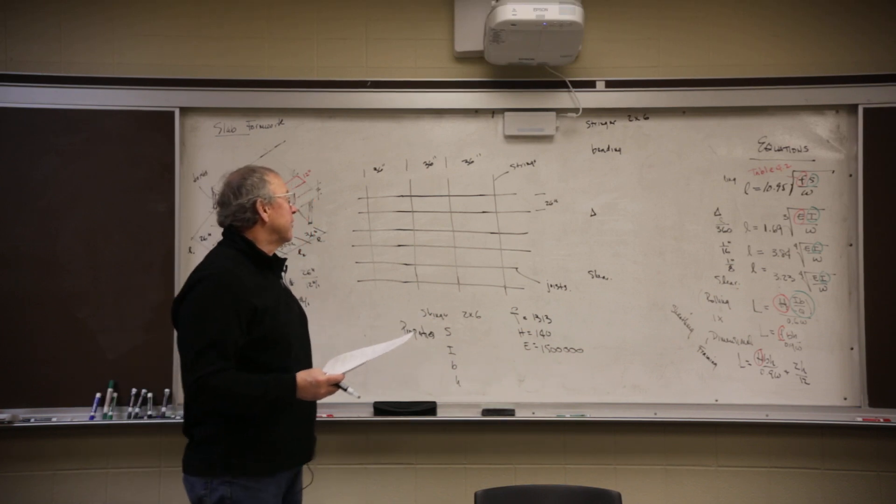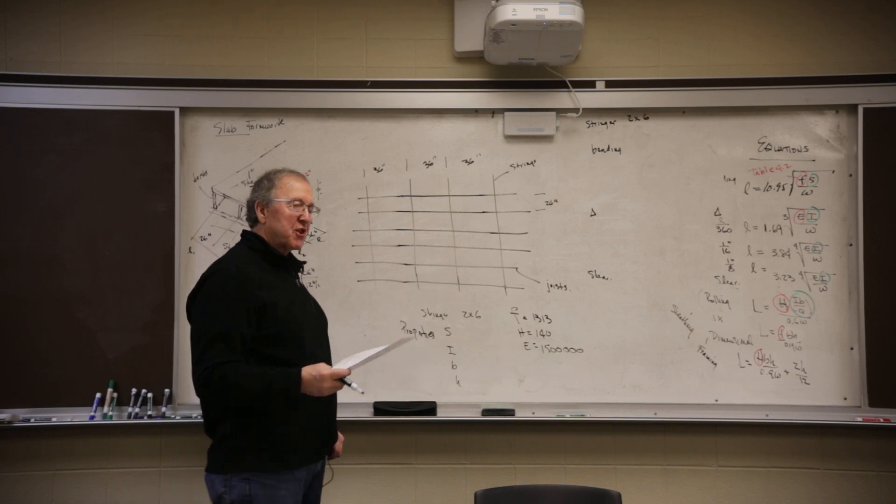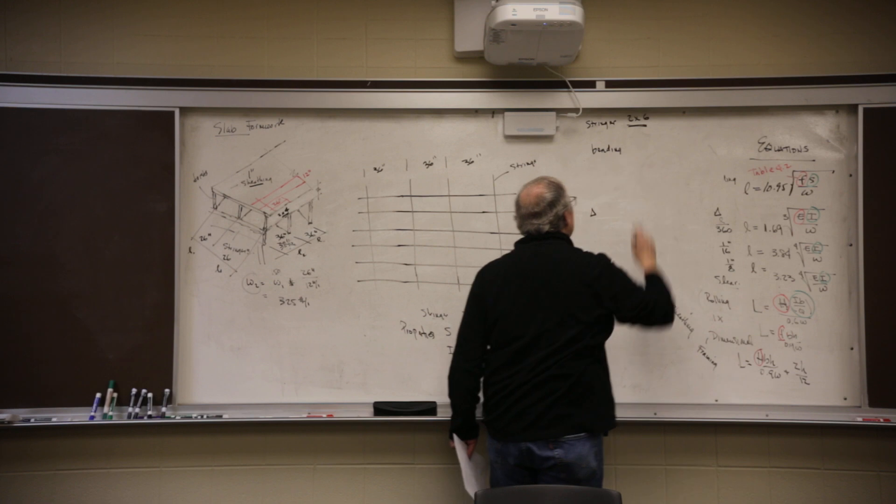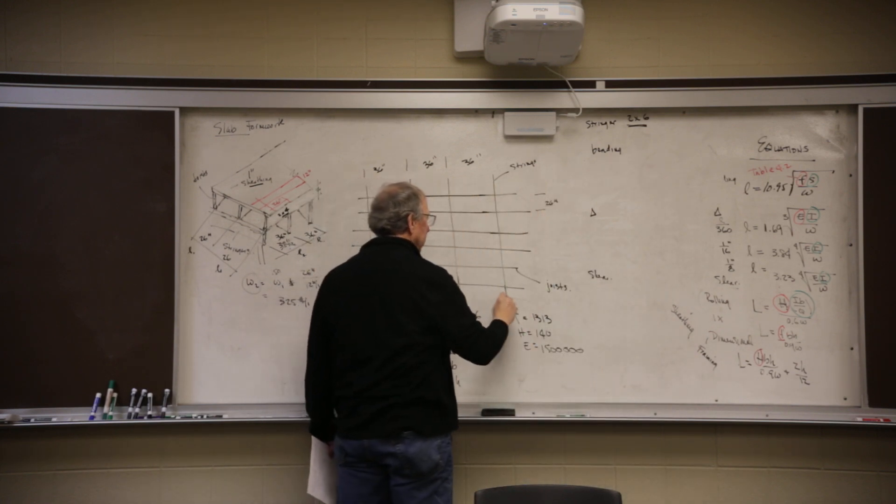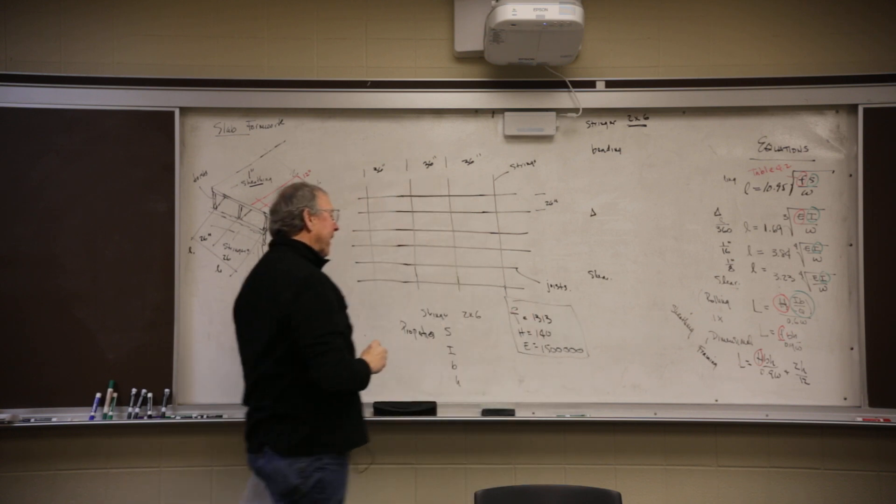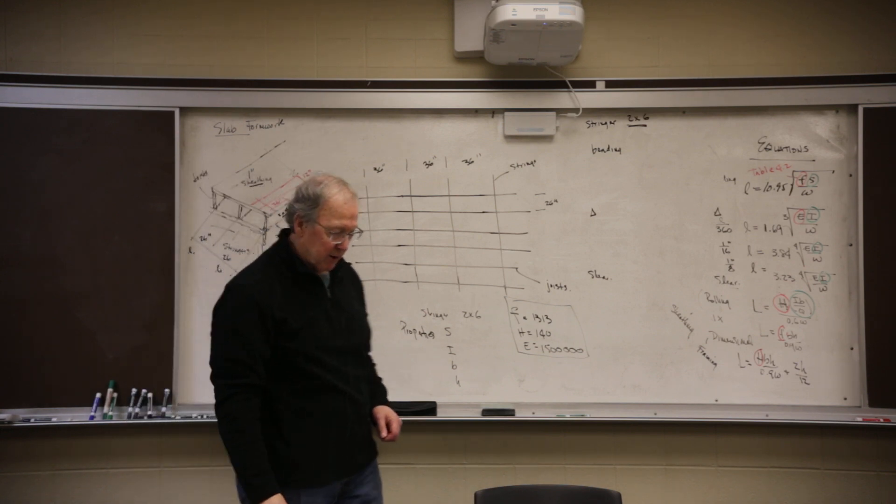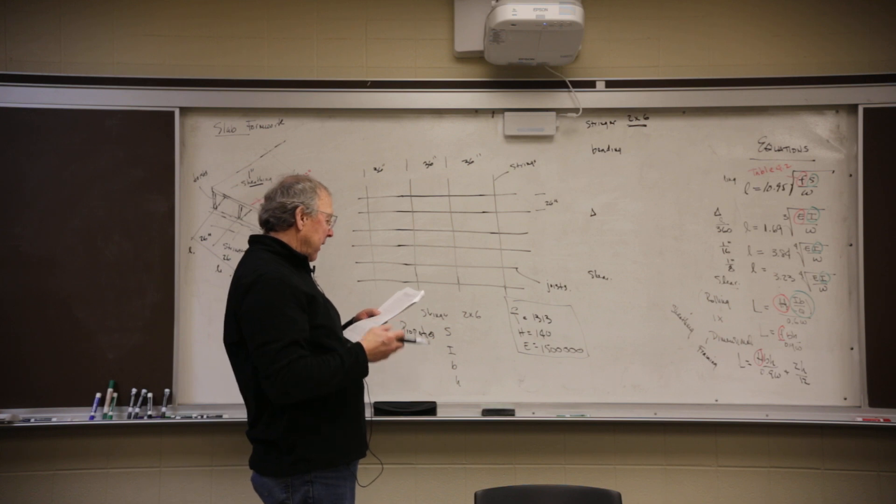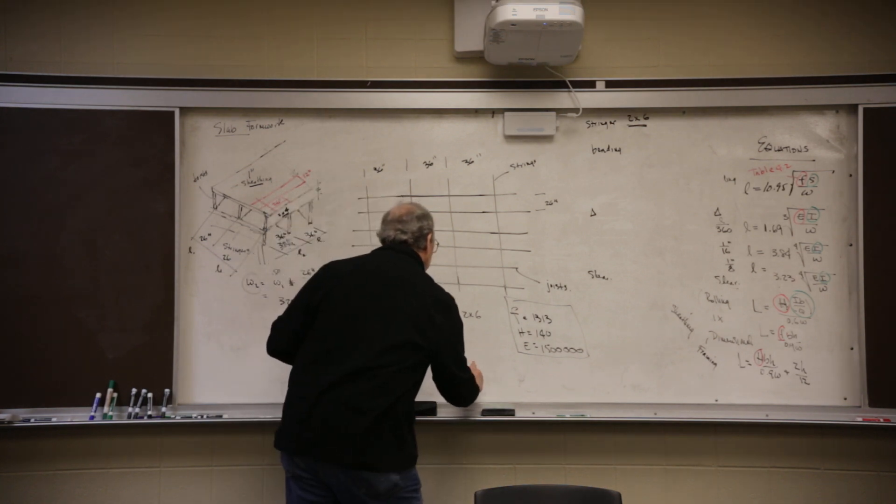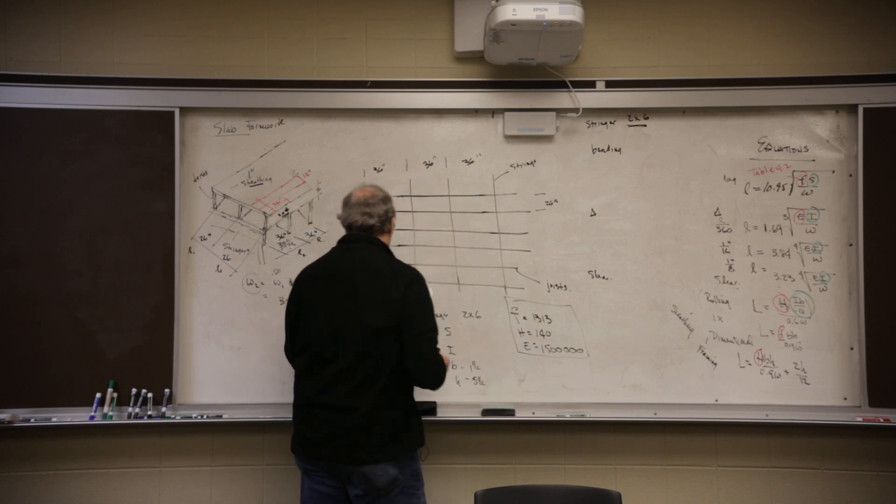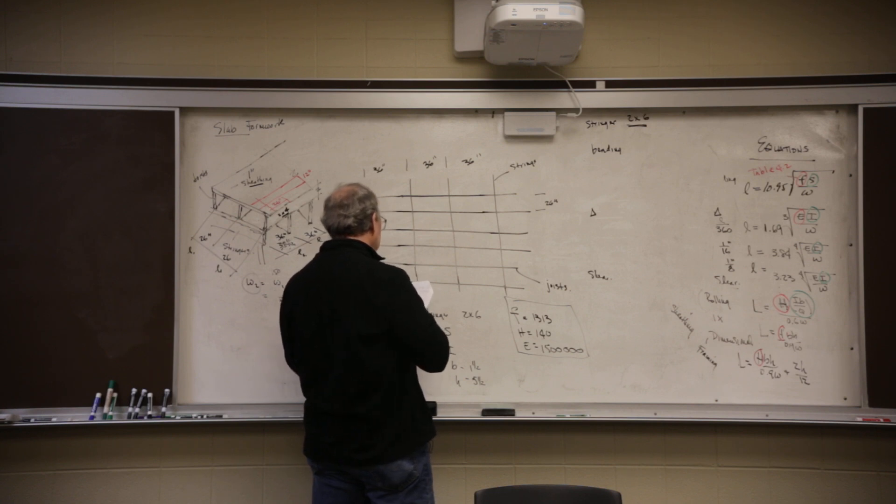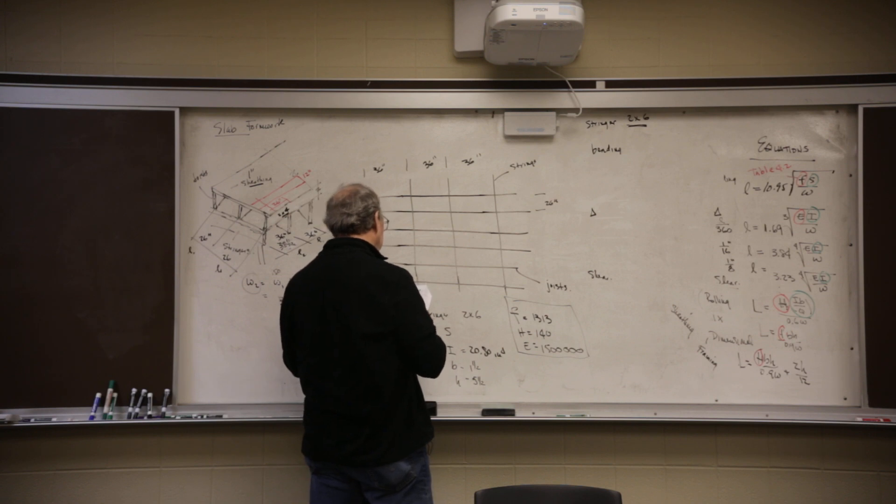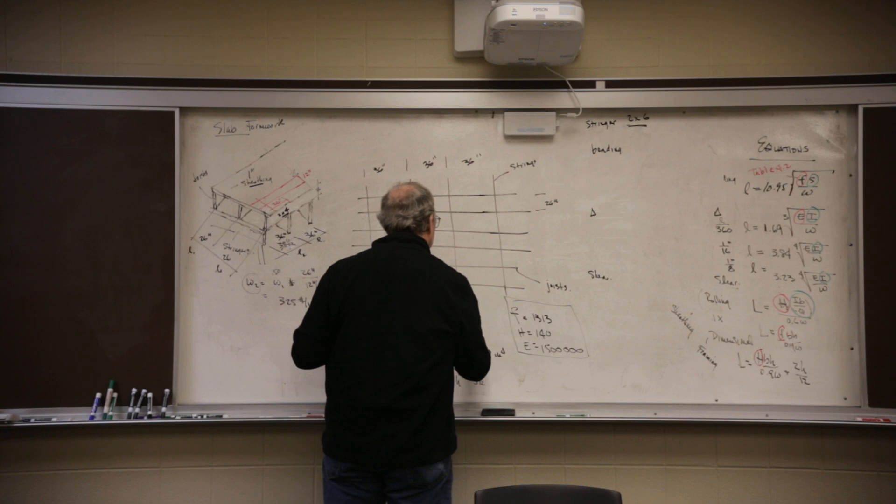Okay, we're going to check and make sure that the posts are spaced so that the stringer doesn't have problems. The stringer size that they've proposed is a 2 by 6, same material, so I just recopied the stress values from the last part. Now the stringer is a 2 by 6, so you have to go into chapter number 4 again and go to table 4-1 and look up a 2 by 6. It's inch and a half by 5 and a half. If you keep going across you'll find it's got a moment of inertia of 20.80 inches to the fourth. If you continue on you'll find out it has an S of 7.56 inches cubed.